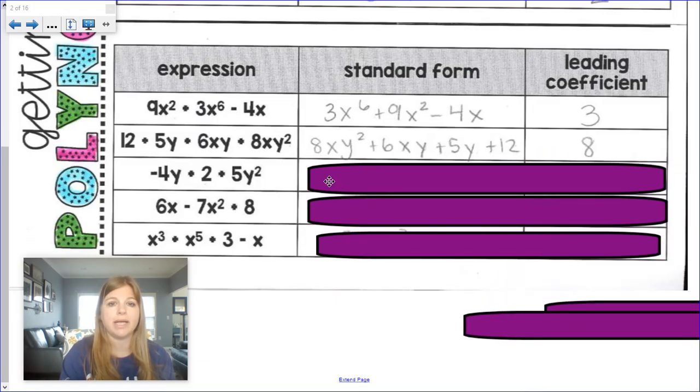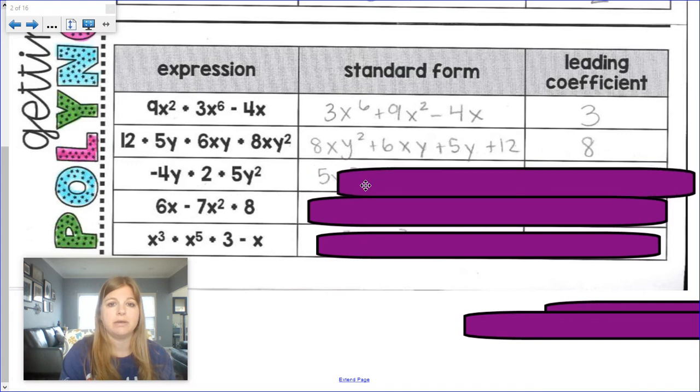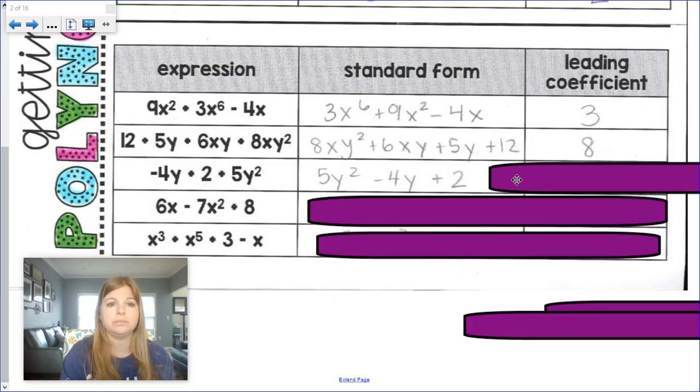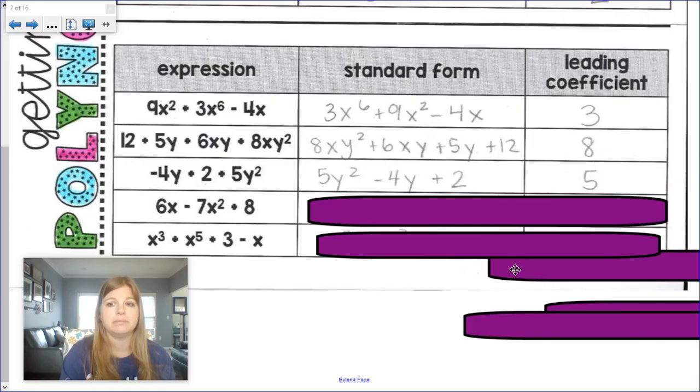Next one. Highest degree? 5y squared. Next, negative 4y. Last plus 2. Leading coefficient? Positive 5.